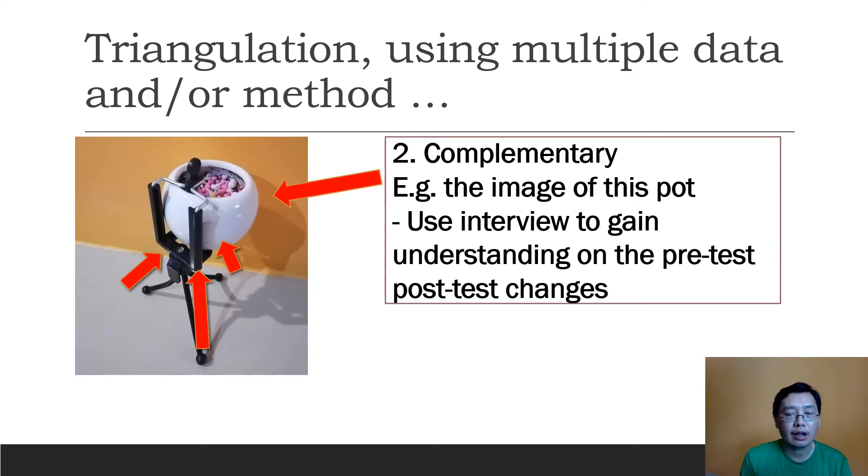Or are you looking at complementary? In another word, you want to understand the phenomenon better by using different methods or data to help you paint different pictures. For example, if I want to draw an image of this pot, I might want to look at it from different angles. So I might be using one direction, two directions, three directions, the 3D three dimensions before I draw this pot. So triangulation of data and methods would act as complementary to each other.